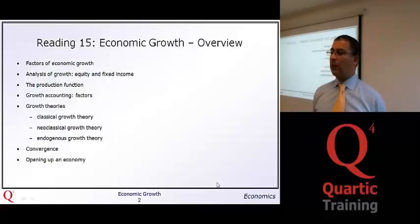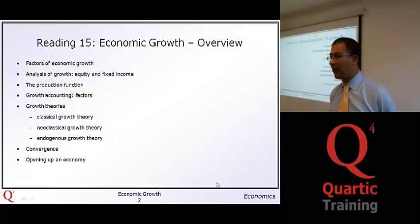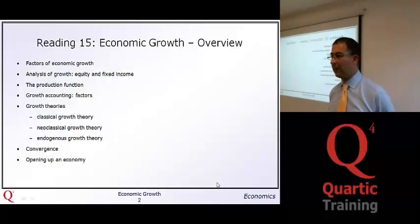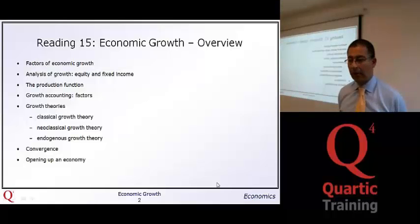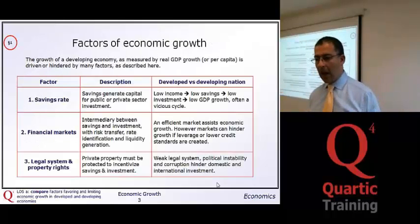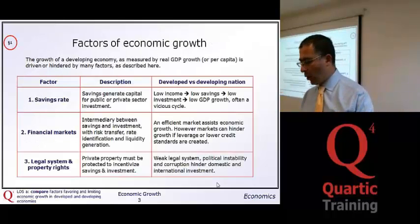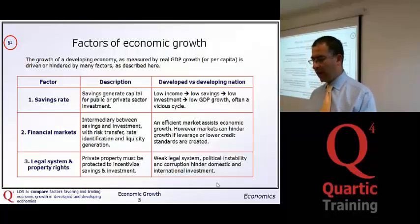The three growth theories link to the idea of convergence — do different countries converge to the same level of economic output, or to the same level of economic growth, or both? And then we look at how we open up an economy and the incentive to do so. We begin with what are the factors of economic growth, and in particular what factors differ between developing and developed countries.